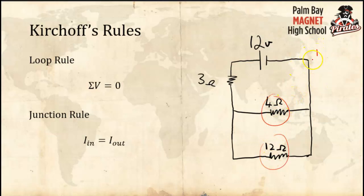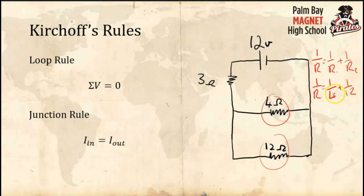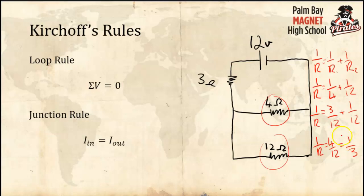Because those two are in parallel, I'll use 1/R = 1/R1 + 1/R2. So the equivalent resistance is: 1/R = 1/4 + 1/12. I can't add them directly, so I convert 1/4 to 3/12, giving 1/R = 3/12 + 1/12 = 4/12, which simplifies to 1/3. Flipping both sides, the equivalent resistance of those two resistors in parallel is equal to 3 ohms.